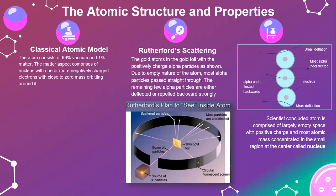Rutherford scattering is an experiment to see what is inside the atom. Gold atoms in a gold foil are bombarded with positively charged alpha particles. Due to the empty nature of the atom, most alpha particles pass through. The remaining few alpha particles are either deflected or repelled backward strongly. Scientists concluded that the atom is comprised of largely empty space, with positive charge and most atomic mass concentrated in a small region at the center called the nucleus.